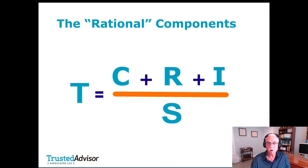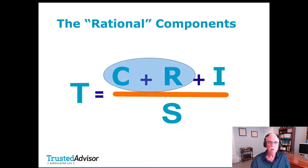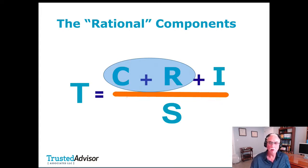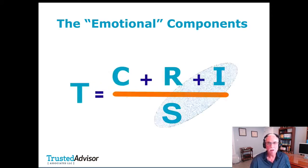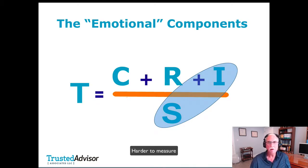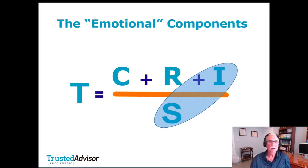Looking at all four components — C, R, I, and S — the first two we might broadly call rational. Those are the ones you can do metrics on, measure, define, and translate fairly easily into behaviors. The other two, intimacy and low self-orientation, I call more emotional. They're a lot harder to measure and a lot more intuitive — the soft skills, if you will.